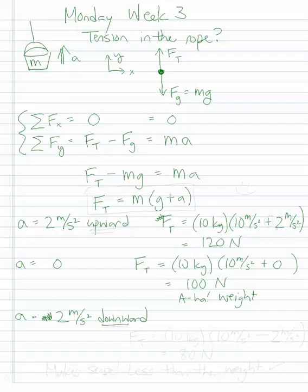But when I go to put downward in the math, I'm going to put it in as a minus sign. Just the way when I put it upward, I had a positive sign here. So now, in this case for downward, I have the force of tension is 10 kilograms times 10 meters per second squared plus a negative 2 meters per second squared. And so this is only 80 newtons. And this makes sense because this should be less than the weight.